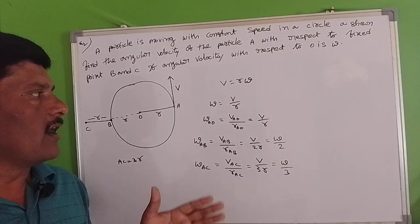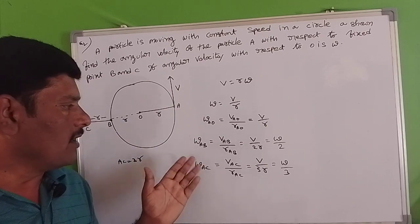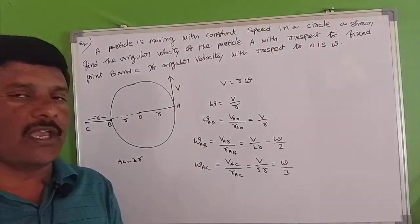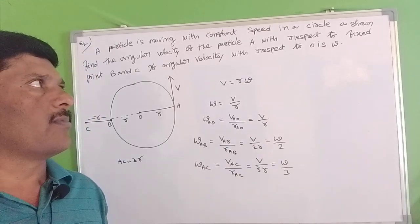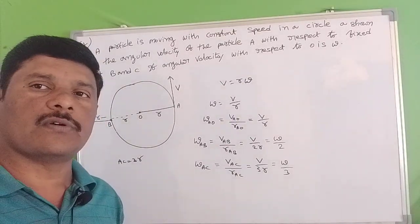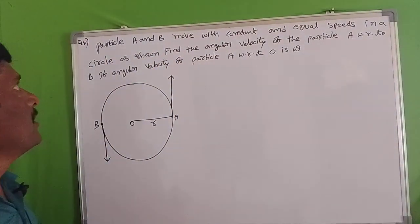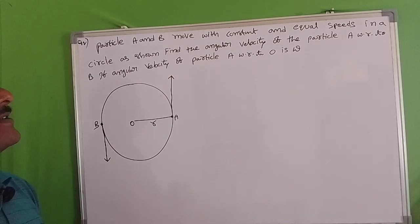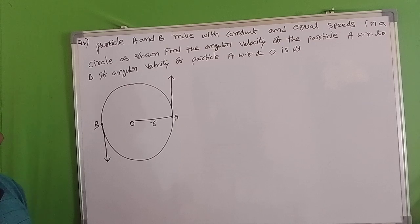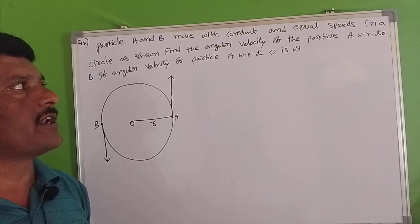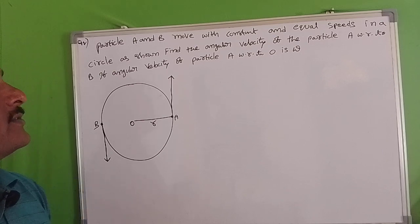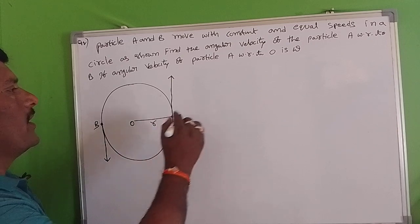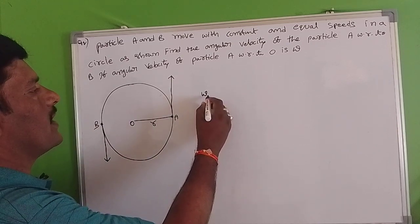So we have found: angular velocity A to O, and if we find the angular velocity A to B and A to C, this is how such problems are solved. Next problem: particles A and B move with constant and equal speeds in a circle. Find the angular velocity of particle A with respect to B, if the angular velocity of particle A with respect to O is omega. First, we find the angular velocity at the origin point O.